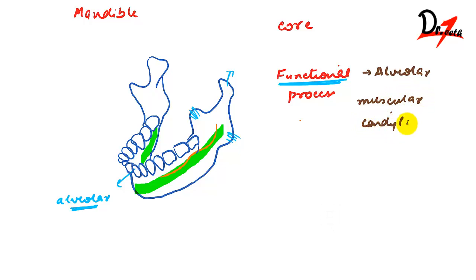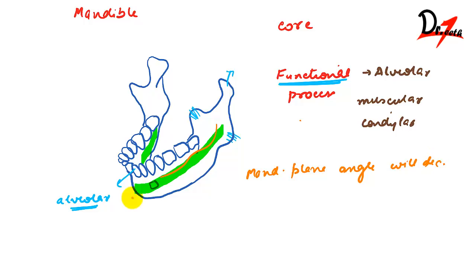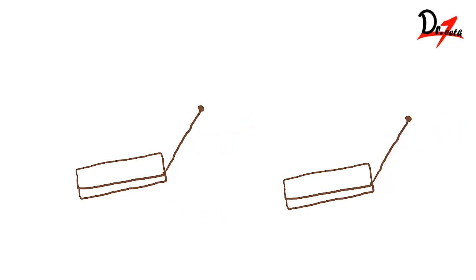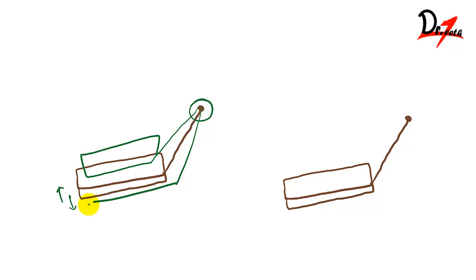Now let's place an implant in the core of the mandible. What we observe is that the mandible rotates in such a way that the mandibular plane angle will decrease — that is, it will be up anteriorly and down posteriorly. This can happen by two ways: rotation occurring within the condyle, where the condyle rotates upward or downward, or rotation occurring within the body of the mandible itself.